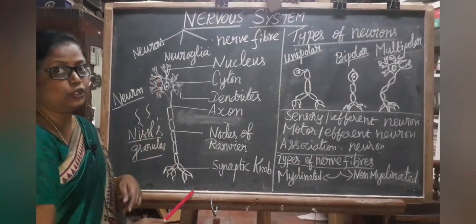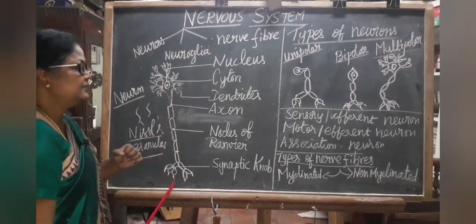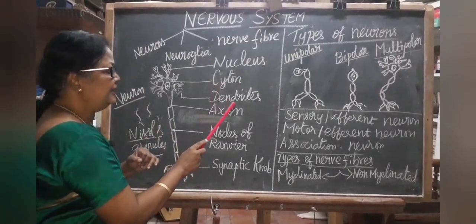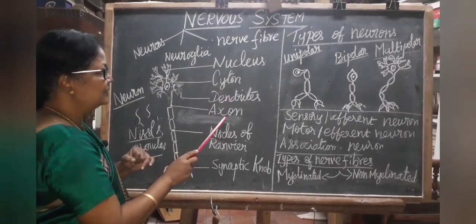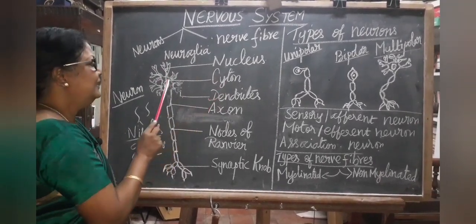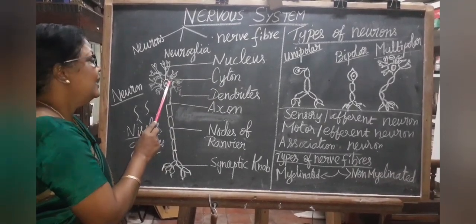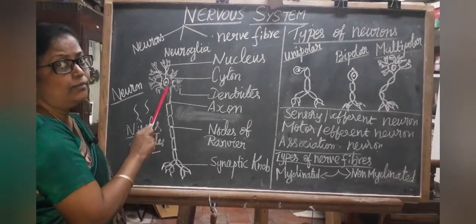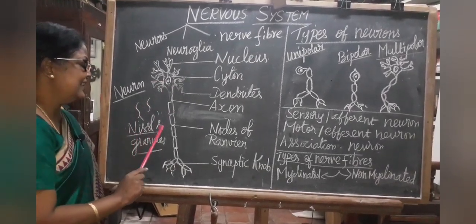The structure of a neuron — neurons have three important parts: cytone, dendrites and axon. The cytone is also called the cell body; it contains a nucleus in the center. It is filled with cytoplasm called neuroplasm, and contains thread-like structures called Nissl granules.